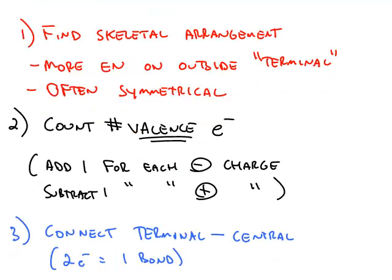The first step is to find the skeletal arrangement. In other words, we want to put the more electronegative elements on the outside, and those are called terminal atoms. The less electronegative atoms are in the middle, those are called central atoms. Usually, these will be symmetrical, and we'll see this with examples in a minute.